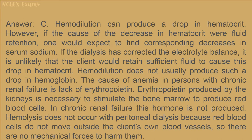Answer: C. Hemodilution can produce a drop in hematocrit; however, if the cause were fluid retention, one would expect corresponding decreases in serum sodium. If dialysis has corrected the electrolyte balance, it is unlikely the client would retain sufficient fluid to cause this drop. The cause of anemia in chronic renal failure is lack of erythropoietin, produced by the kidneys to stimulate bone marrow to produce red blood cells. In chronic renal failure, this hormone is not produced. Hemolysis does not occur with peritoneal dialysis because red blood cells do not move outside the client's own blood vessels, so there are no mechanical forces to harm them.